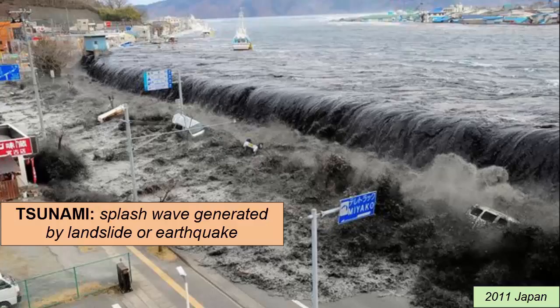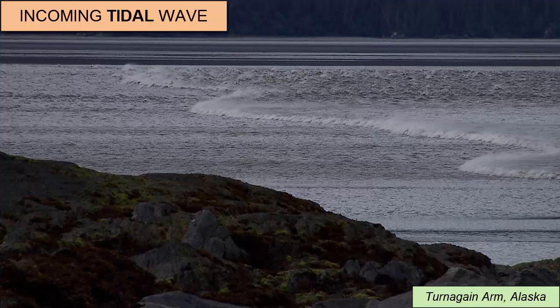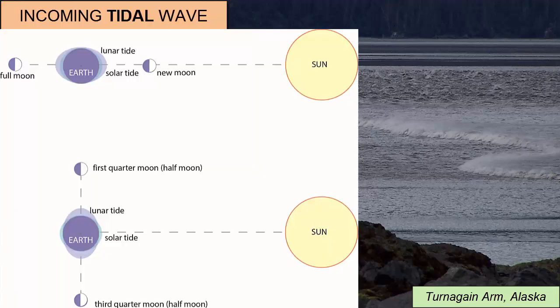Tsunami are rare waves that come from a landslide or earthquake that could also have happened thousands of miles away. And the most common and consistent waves that hit our beach, usually twice a day, are called tides and are caused by differences in the gravitational forces felt by different parts of the earth relative to its neighbor the moon, and to a lesser extent, the sun. We'll talk more about these tidal waves in a future video tutorial.